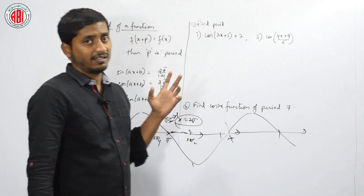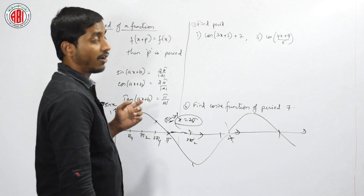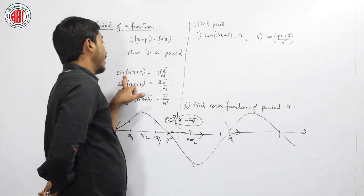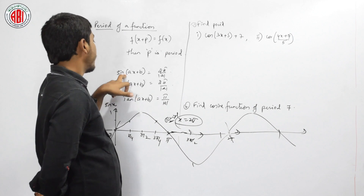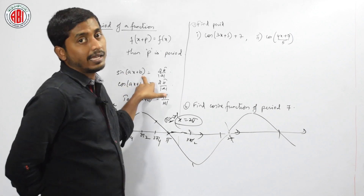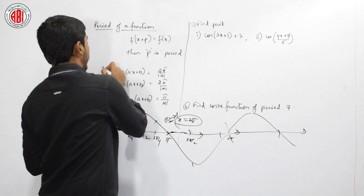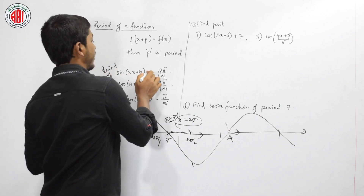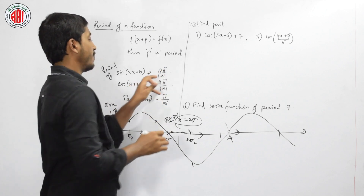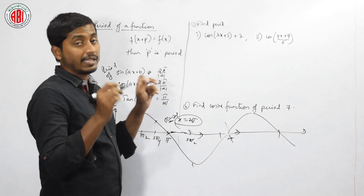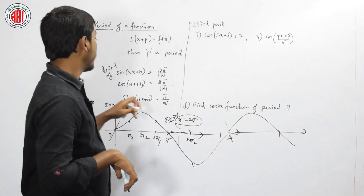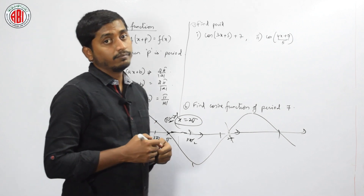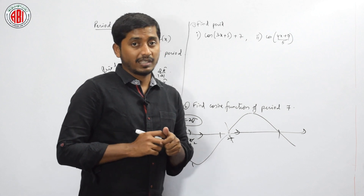In general, let us look at the formulae for periodic functions. If a function is in the form of sin(ax + b), then the period is given as 2pi by mod a. Remember, a is always positive. Similarly, cos(ax + b) also has period 2pi by mod a. Tan has period pi by mod a.